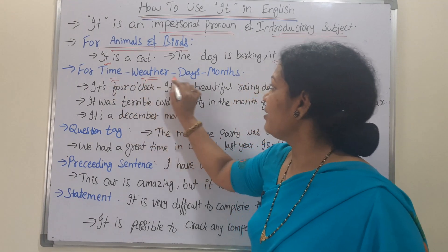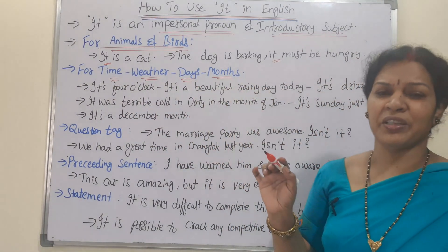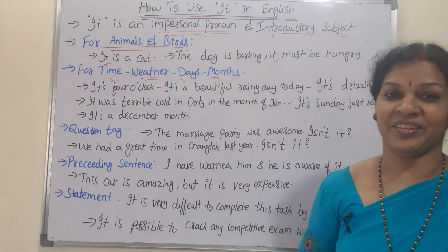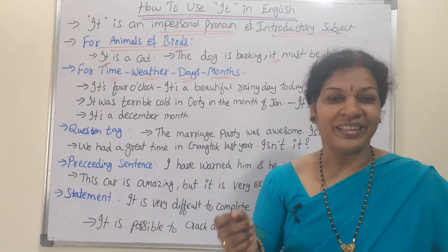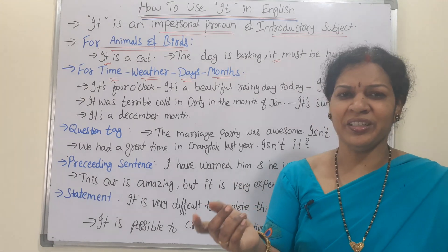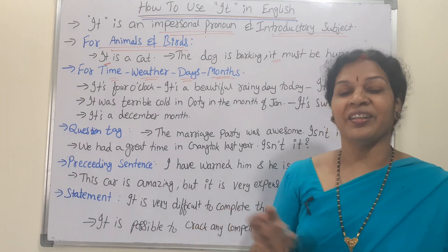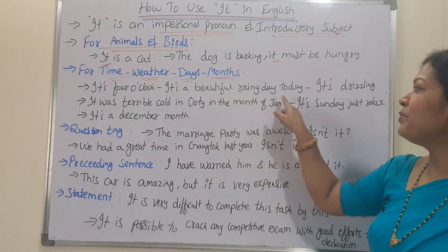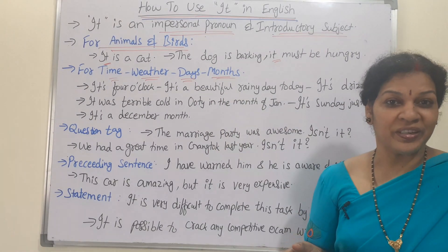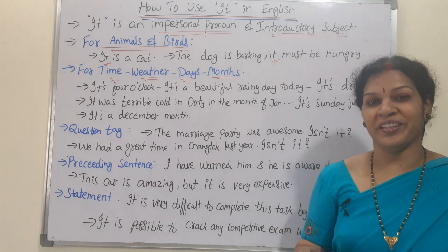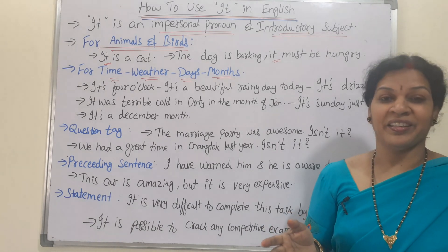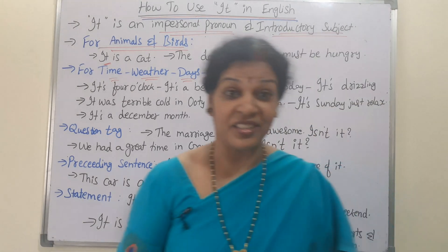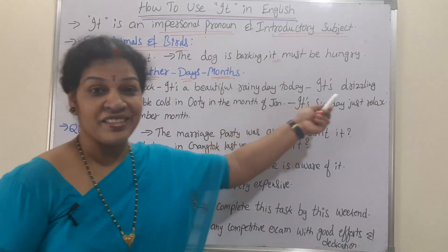Another way is for time, weather, days, and months. For time, for example: It's 4 o'clock. It's 7 o'clock. It's 8 o'clock. For weather: It's a beautiful rainy day today. It's a beautiful sunny day today. It's a beautiful weather. It's drizzling — that means small rain. So we say it's drizzling about weather.